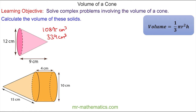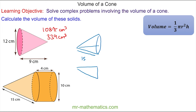For the composite shape, we work out the volume of the cone separately. The slant length is 15cm, so we need to find the perpendicular height using a right-angled triangle where the hypotenuse is 15 and the base is half the diameter, which is 5. Using Pythagoras' theorem, the height is the square root of 15² − 5², which is approximately 14.1cm.